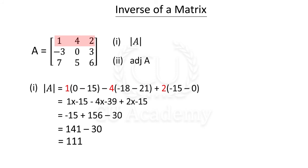If the determinant is not equal to 0, then the inverse exists. That is the determinant. If determinant is equal to 0, then the inverse does not exist. If the determinant is not equal to 0, the inverse exists.